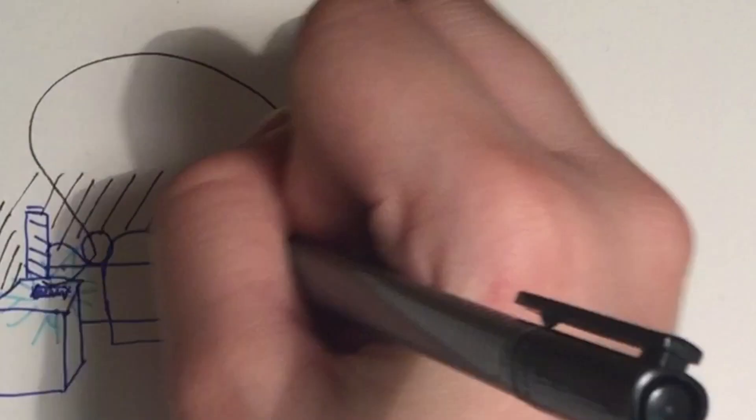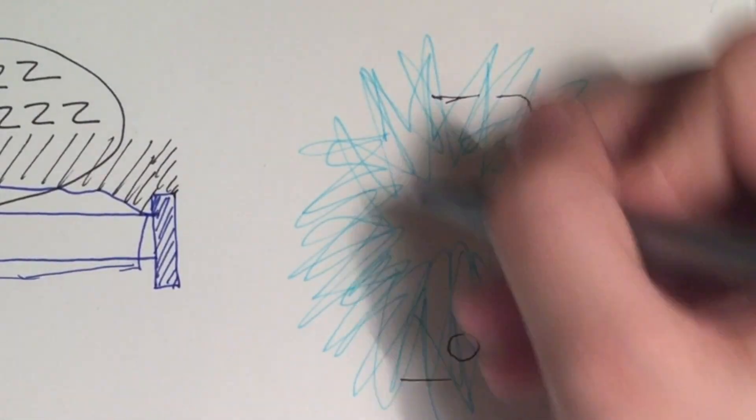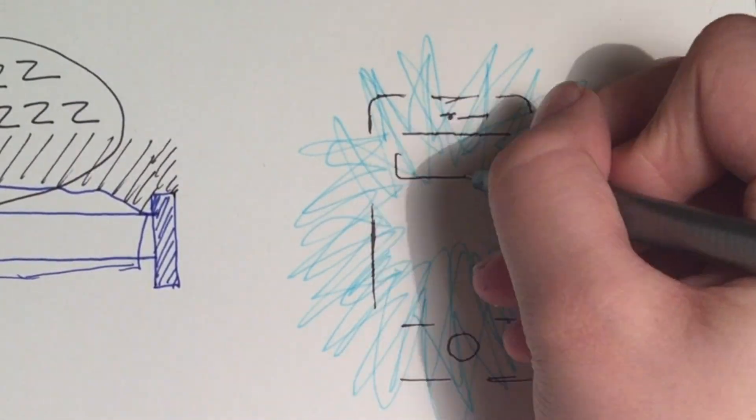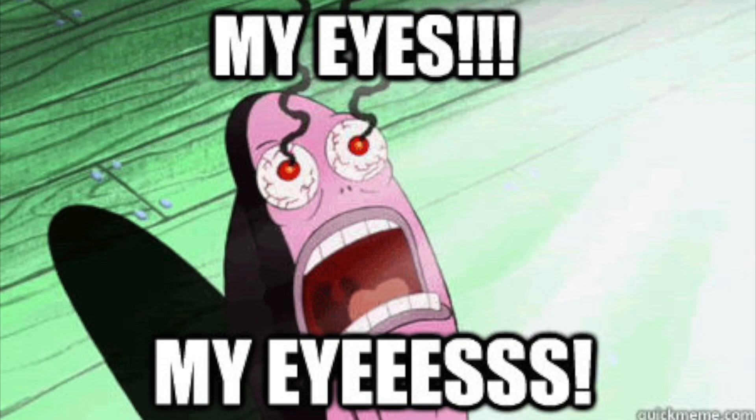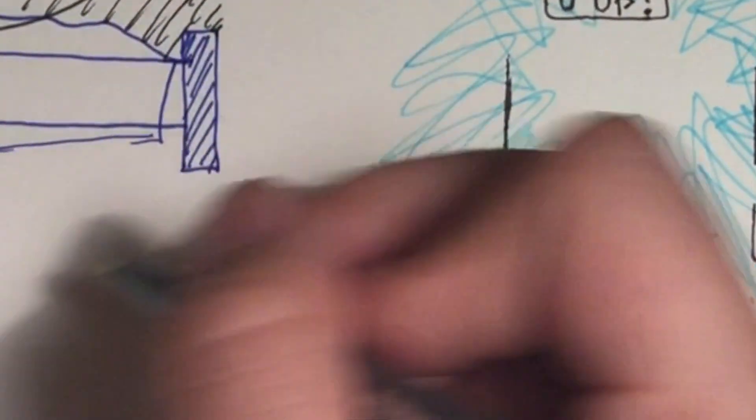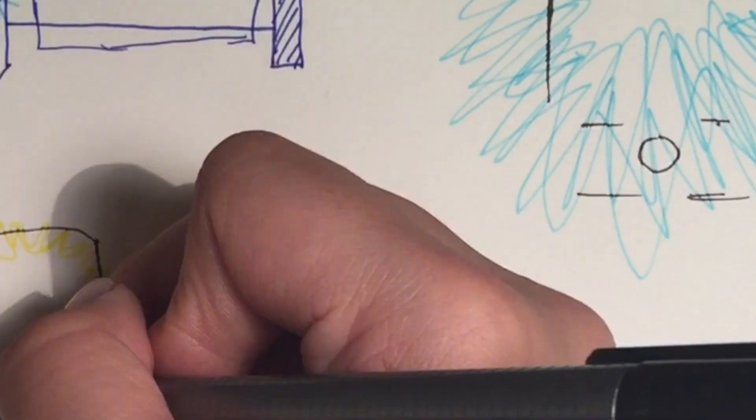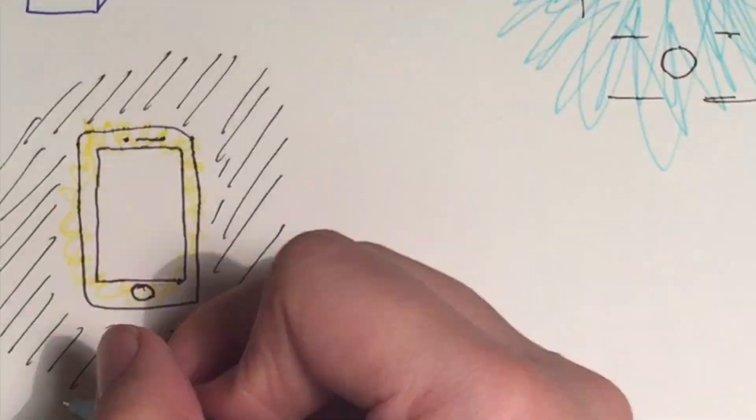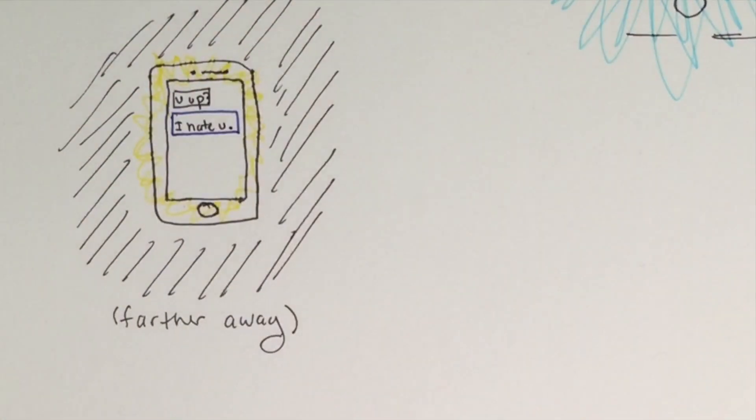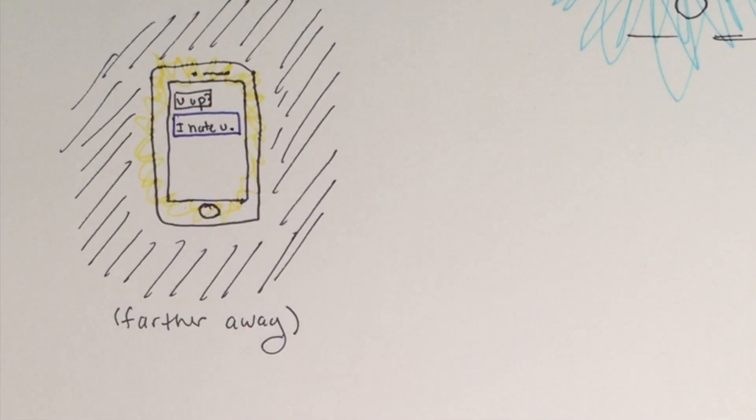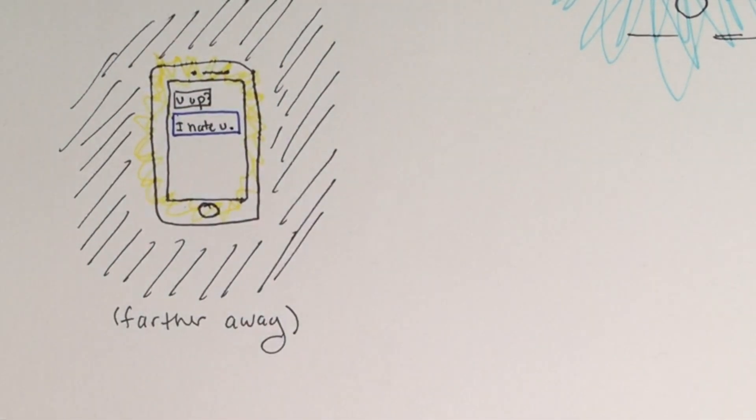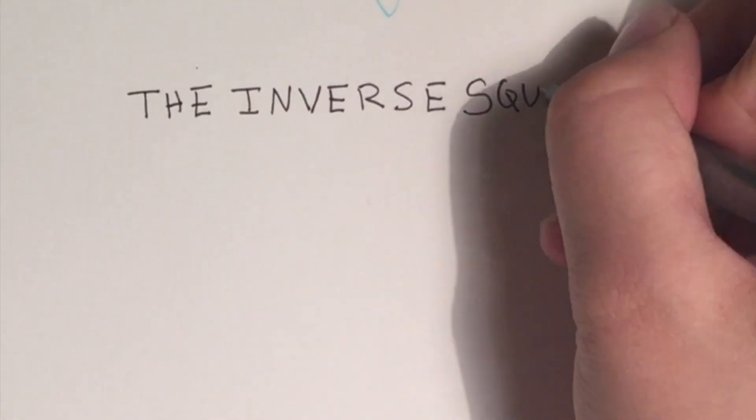Have you ever woken up in the middle of the night because of the alarm or received a text message on your iPhone, and when you held the phone close to your face, the light blinded you? Our instinctual reaction is to hold the phone further away to reduce the intensity of light in our eyes. And it just so happens to be that there's a very neat physical law that shows us how the intensity of light decreases with increasing distance. Behold, the inverse square law.